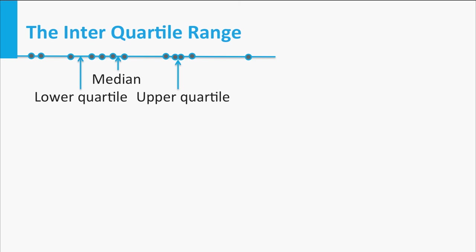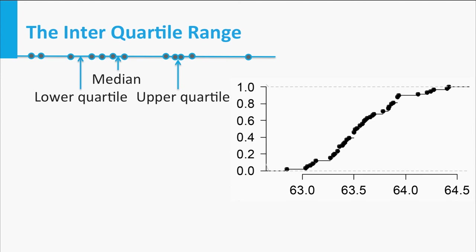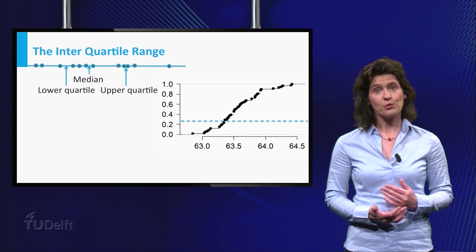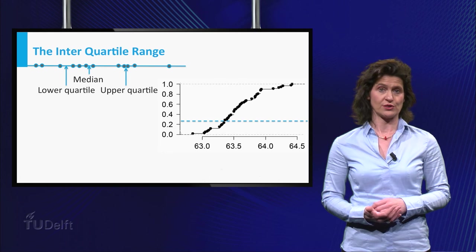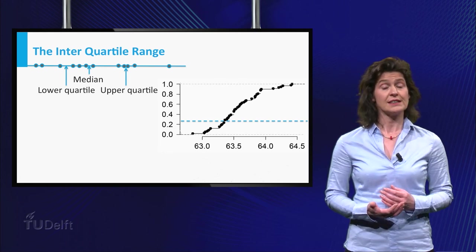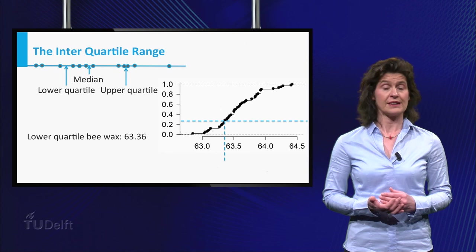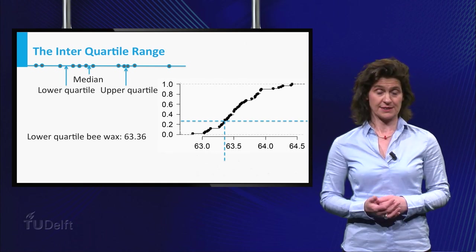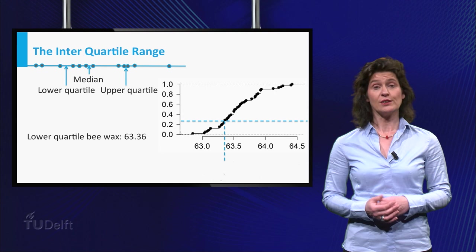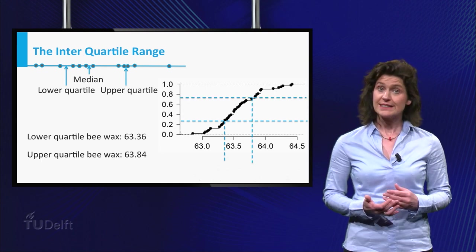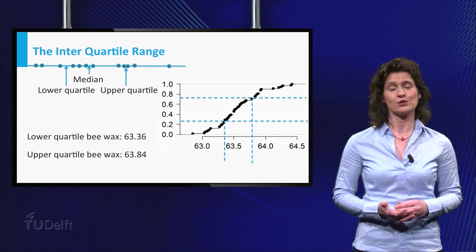There is a natural connection of the quartiles with the empirical distribution function. This picture shows the empirical distribution function of 59 measured melting points of a natural b-wax. Add a horizontal line at height 0.25 to this plot, and check where it hits the empirical distribution function. The x-coordinate of this point is the lower quartile, in this case 63.36. Similarly, you can determine the upper quartile, and for this dataset its value is 63.84.